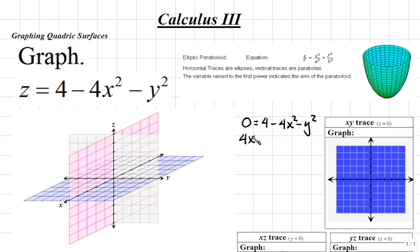So we get 4x squared plus y squared equals 4. And if we divide through by 4, we see that this is the equation that would match that of an ellipse. So the 4's would cancel, and we're left with the equation x squared plus y squared over 4 is equal to 1.